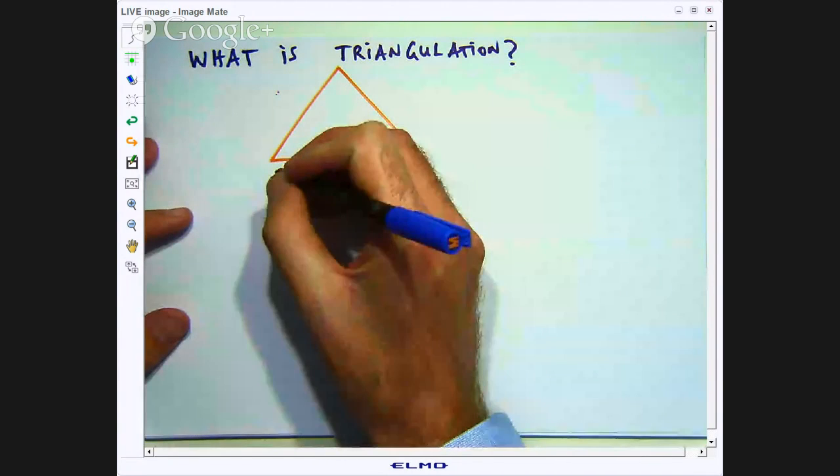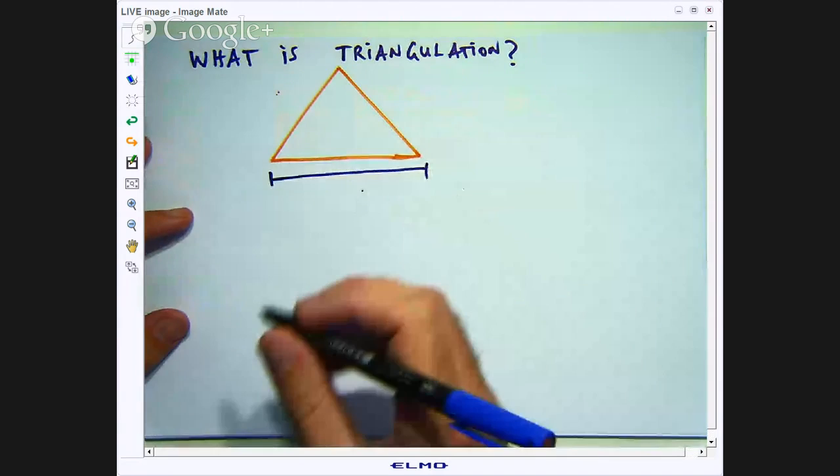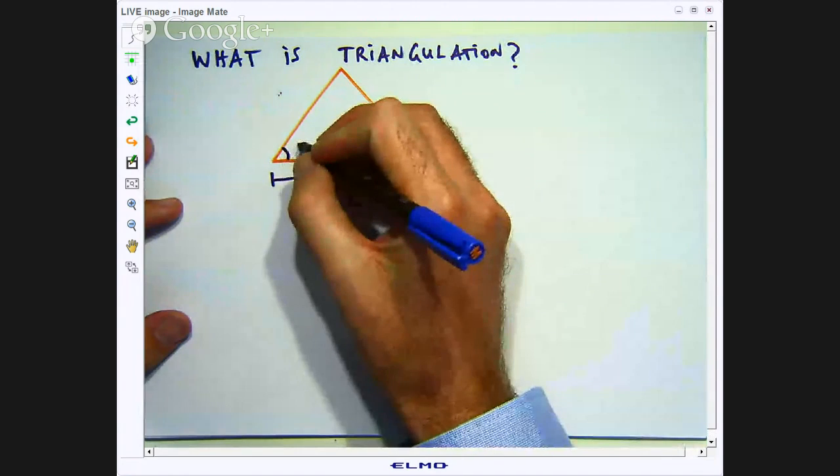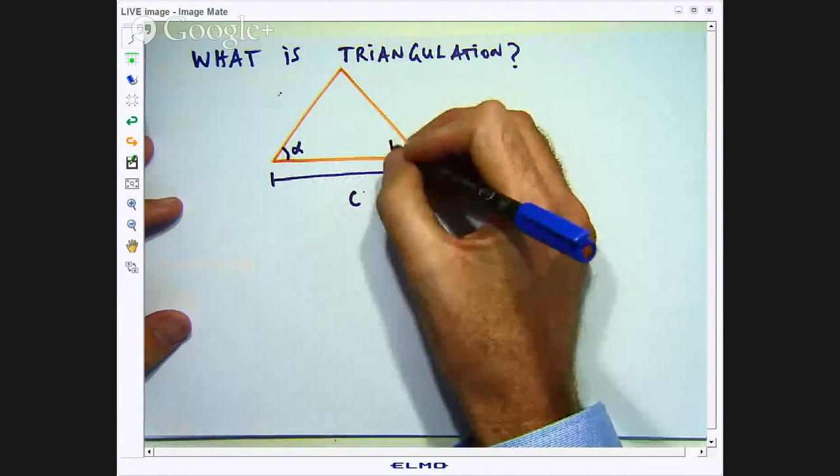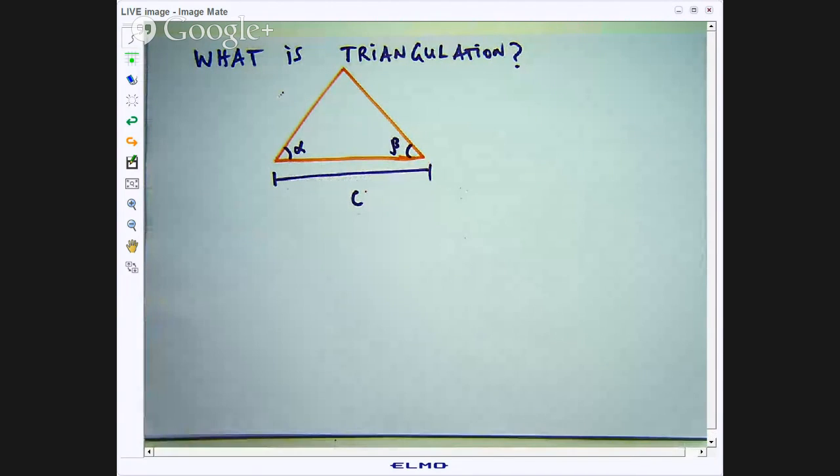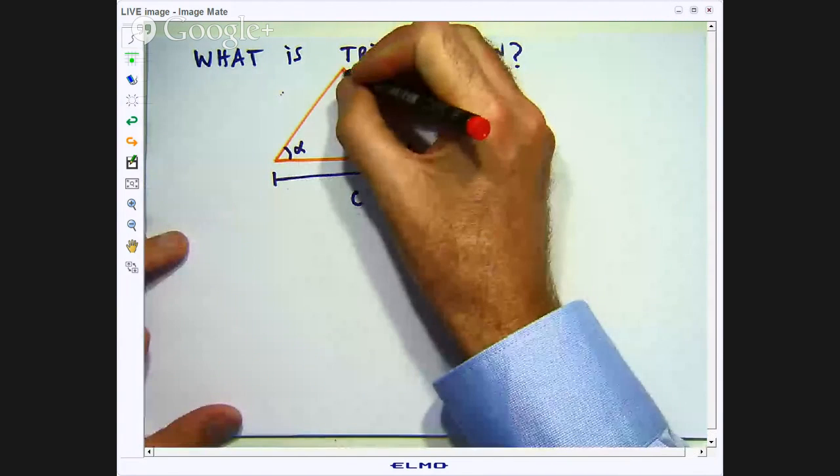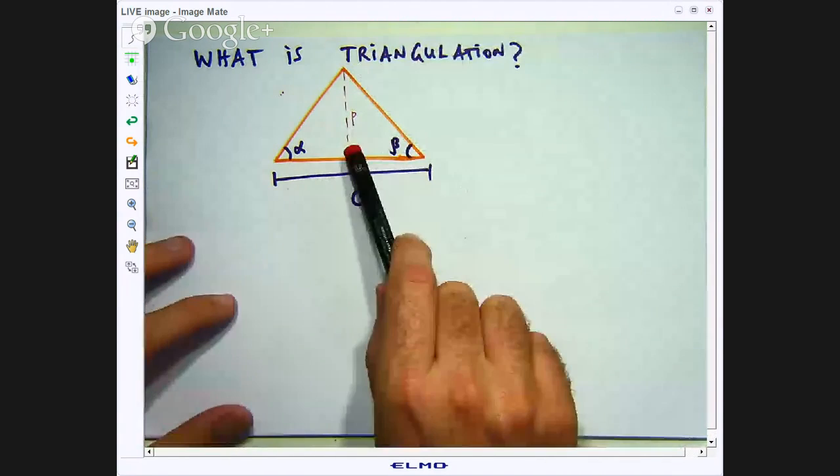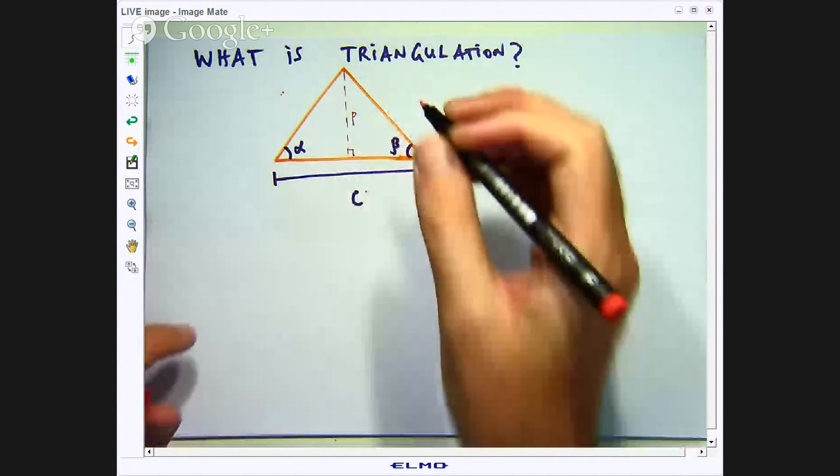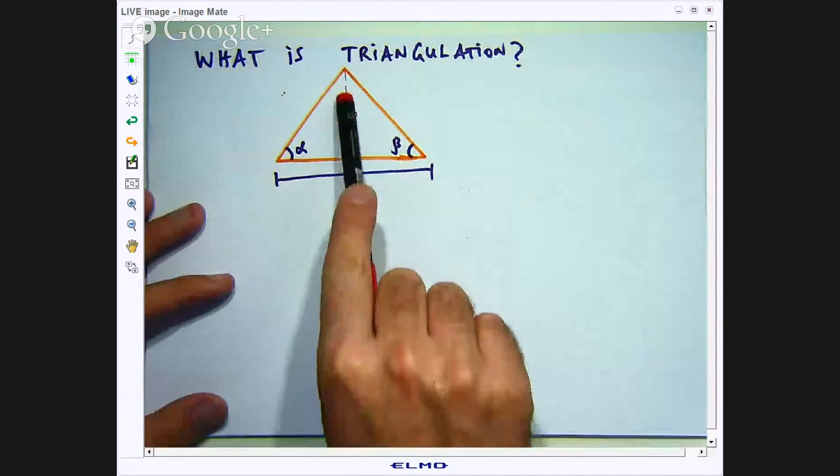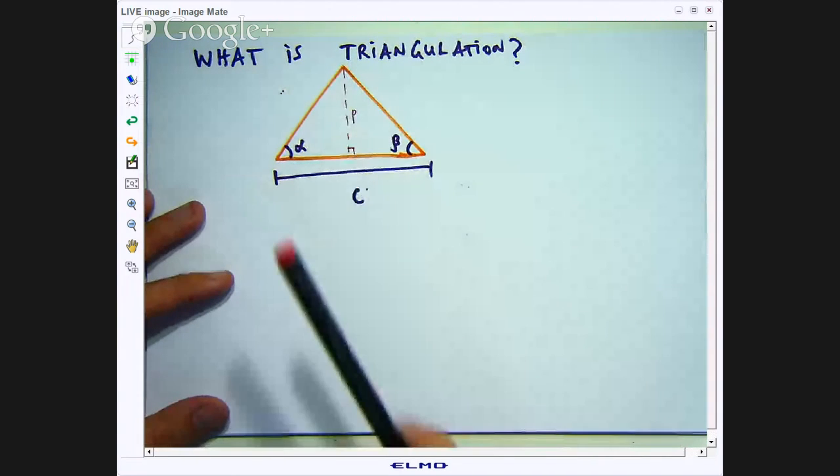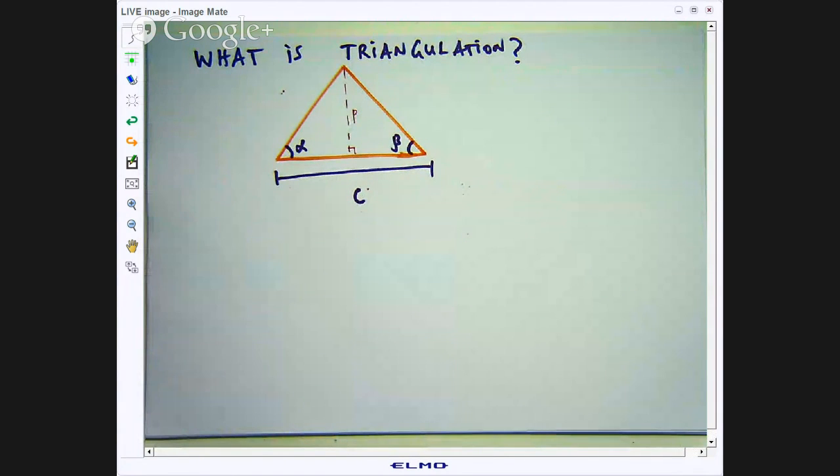But suppose we have the following information. We know this length and we know this angle and this angle and the length of interest is this distance from here, let me just make that a right angle, from here to here. Now you might think well why can't I just measure the distance, just walk along here or just measure the line segment there. Well suppose something is blocking our way like a valley or a river or something like that.